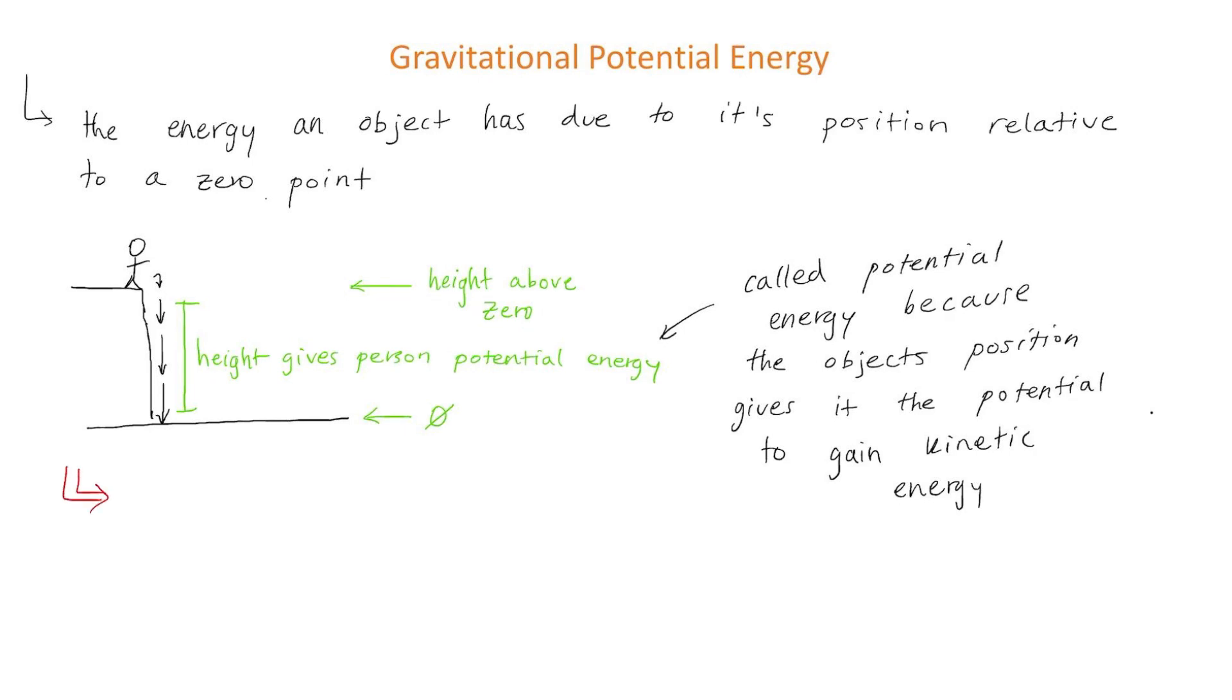Now if you need to calculate an object's gravitational potential energy you can use this equation which says that the potential energy is equal to mgh where m is the mass of the object in kilograms.